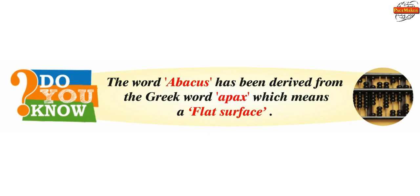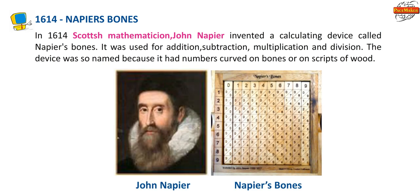Do you know? The word Abacus has been derived from the Greek word 'apex' which means a flat surface. In 1614, Scottish mathematician John Napier invented a calculating device called Napier's Bones. It was used for addition, subtraction, multiplication and division. The device was so named because it had numbers carved on bones or on strips of wood.